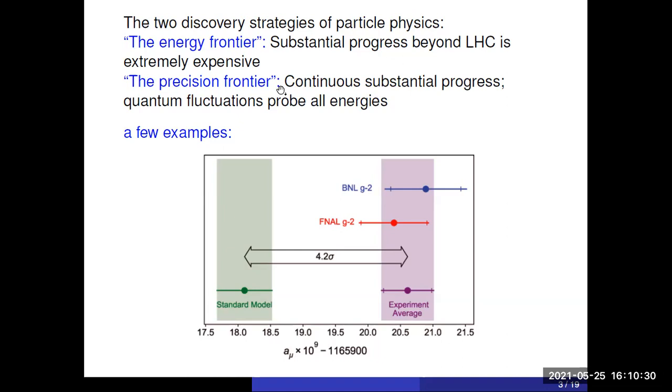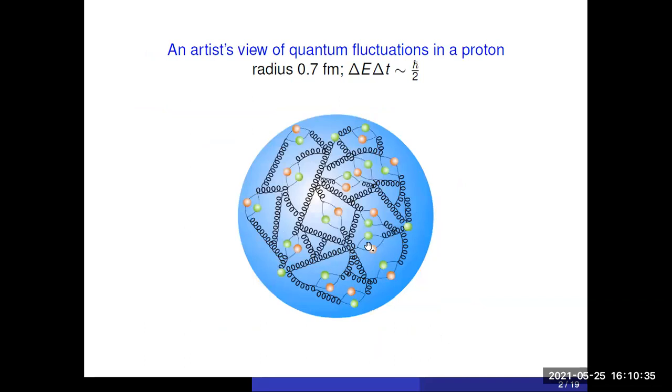The alternative is a precision frontier because even in normal energy scale experiments, you are sensitive to all these fluctuations and these fluctuations include fluctuations at all energy scales.